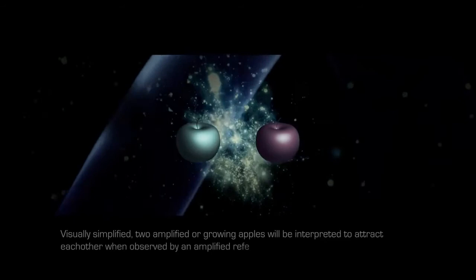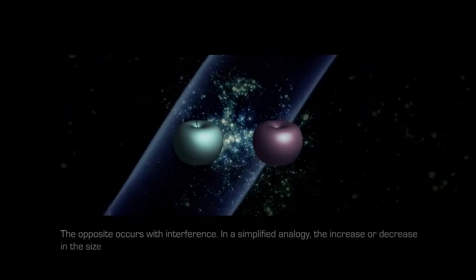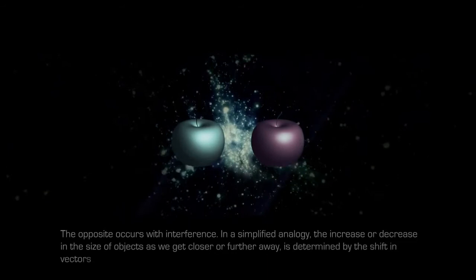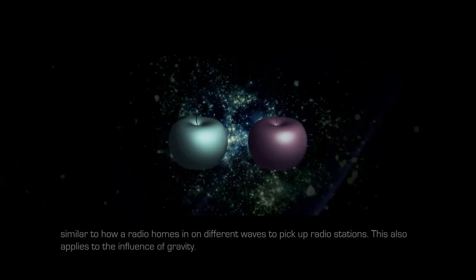Visually simplified, two amplified or growing apples will be interpreted to attract each other when observed by an amplified reference frame, as the size seems unaffected. The opposite occurs with interference. In a simplified analogy, the increase or decrease in the size of objects as we get closer or further away is determined by the shift in vectors of the reference frame, similar to how a radio hones in on different waves to pick up radio stations. This also applies to the influence of gravity.